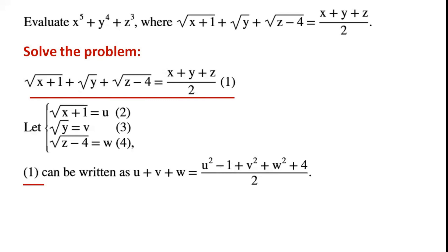Equation 1 can be written as the sum of u, v, and w, which is equal to u squared minus 1 plus v squared plus w squared plus 4 over 2. By rearranging the equation and simplifying, we have 2u plus 2v plus 2w equals u squared plus v squared plus w squared plus 3.